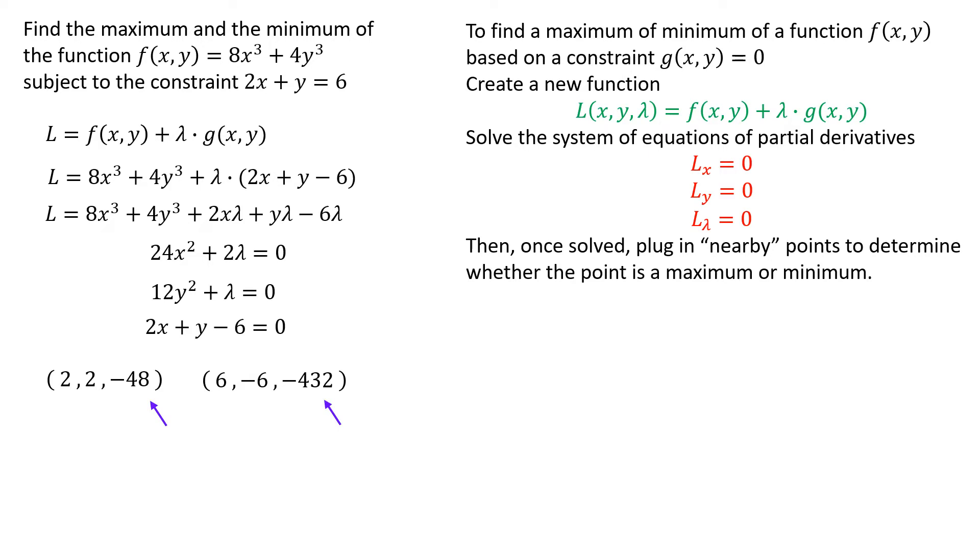And now that we've solved the system of equations, these values at the end are our lambda values. And in this course, in a Calculus 2 course, we don't care a lot about the values of lambda. We care more about what the values of x and y are. Remember, we're trying to optimize this function of x and y based on a constraint that has x and y. Lambda is not part of the answer. Lambda is just a vehicle created by Lagrange and others to help us find the answer we want. So these ordered triples really just tell me what x and y might be in order to maximize or possibly minimize the function.